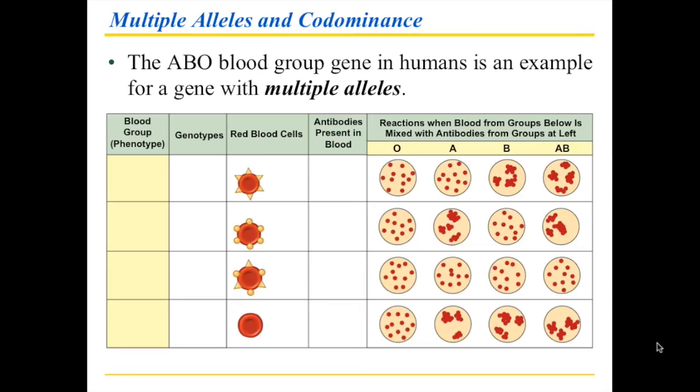The second special case involves multiple alleles, and introduces something called codominance. The example we use here is the ABO blood group.